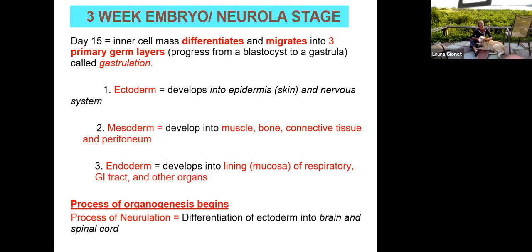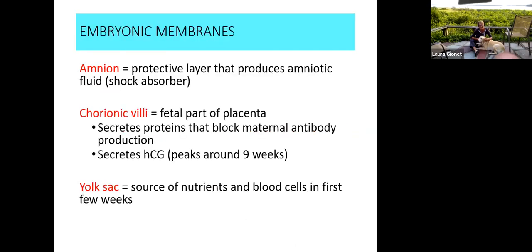The first system to develop is the nervous system with the brain and spinal cord — that process is called neurulation. At the end of the third week we begin neurulation. The embryonic membranes include the amnion, which is essentially the protective fluid layer that acts as a shock absorber and helps regulate temperature. The chorionic villi is the fetal part of the placenta that will develop a blood supply approximating the maternal blood supply.